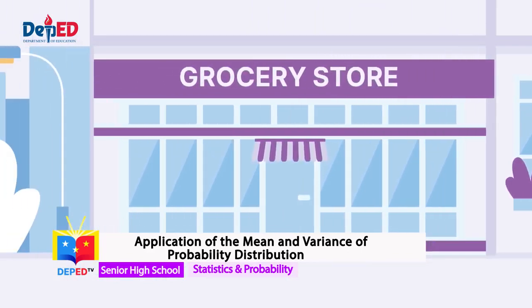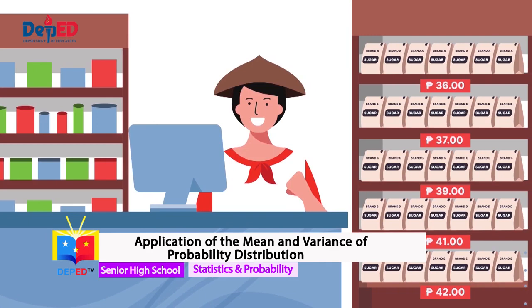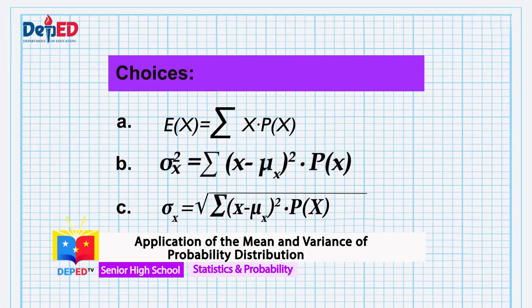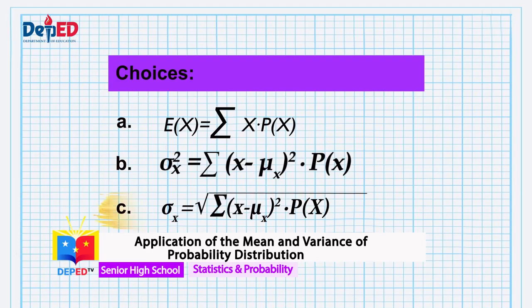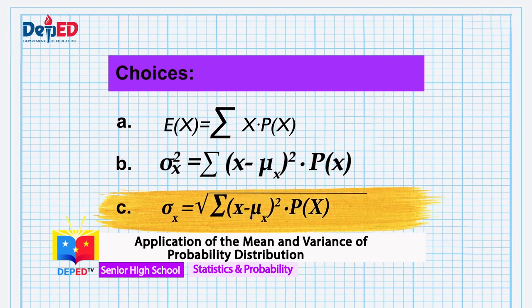In the second situation, I went to the grocery store and noticed that there are five different kinds of brown sugar at different prices, and each brand has different probabilities that they will be sold. What formula should I use if I want to determine how the prices vary from the average price of the product that would be sold to the customers repeatedly? Since I want to look for the variation in prices from the average price, I am actually looking for the standard deviation. Although it also measures variability, the units of standard deviation match those of the prices of sugar since it is the square root of variance. If your answer is C, then you're correct.